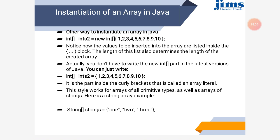Instantiation of an array can be done using the new keyword. In this example, there is another method: without mentioning its size, you can directly give values. This will also instantiate an array of integers. String creation is also possible — in the last line, we are creating one array of strings having values 1, 2, 3. This is the latest feature: we need not write the new keyword while instantiating any array. Both options are available to the user.